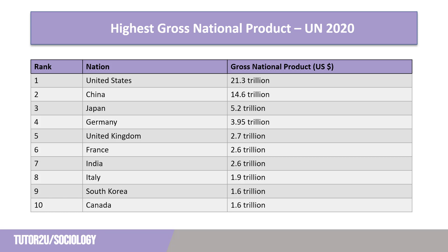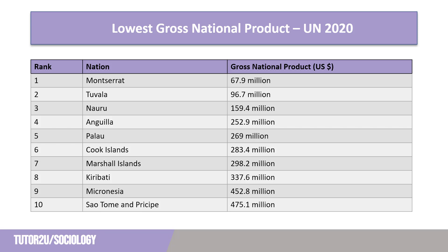The emergence of India as an economic powerhouse sees it placed in seventh, with Italy, South Korea and Canada rounding out the top ten. These would be perceived economically as developed nations. The other end of the scale is dominated by the Pacific Islands, perhaps unsurprisingly given their small populations, with many nations having smaller national incomes than large companies, although that is not exclusive to the bottom end of GNI rankings.